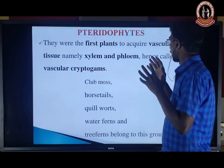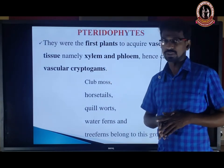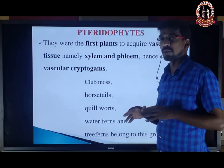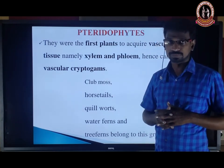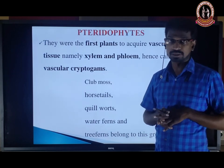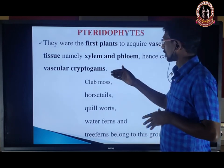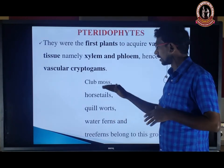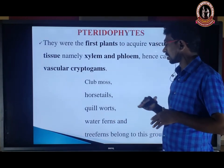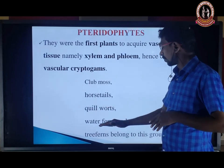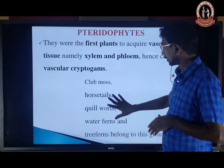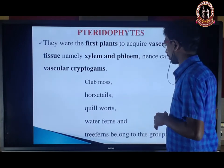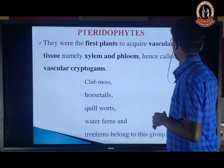Tracheophyta was the first plant to acquire vascular tissue — namely xylem and phloem. Vascular cryptogamae means it has vascular tissue like xylem and phloem, but is non-flowering and non-seeded. Some plants that come under Pteridophyta are: Club mosses, Horsetails, Quillworts, Water ferns, and Tree ferns — all classified under Pteridophyta.